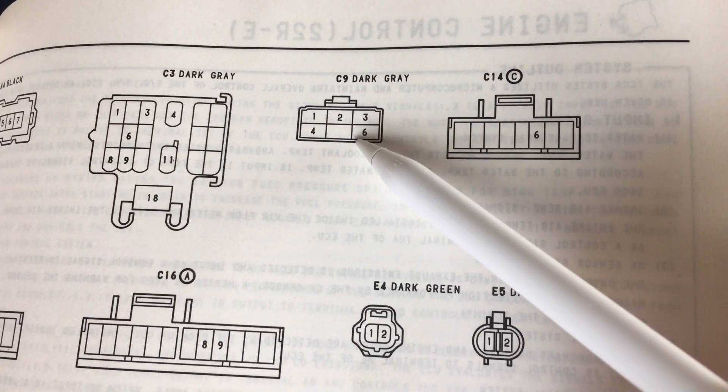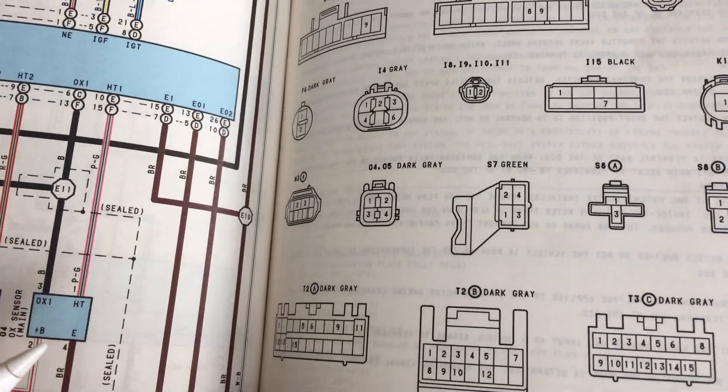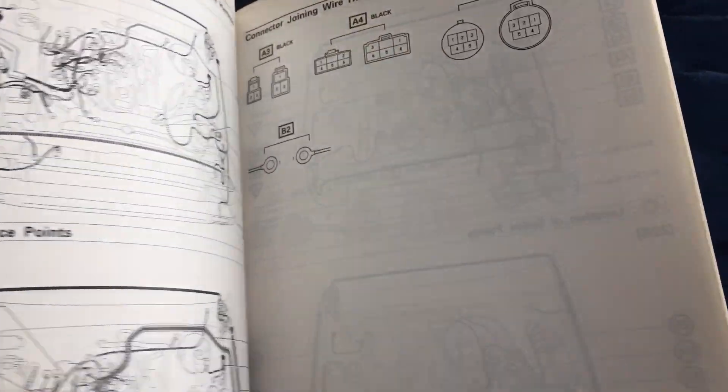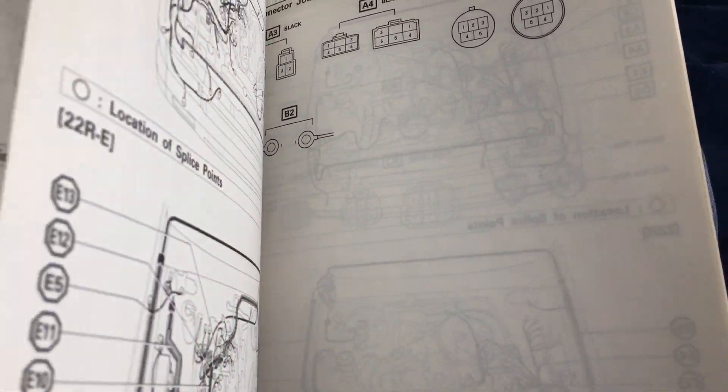The connector goes to the circuit opening relay. Further up in the manual, it will show you exactly where all these things are. If you look here, this is C9.